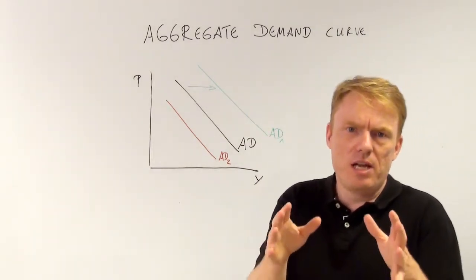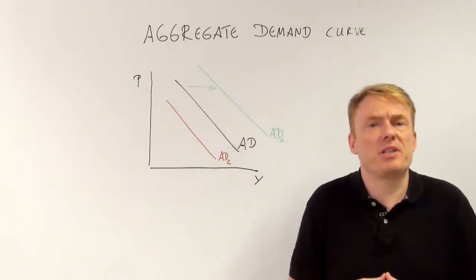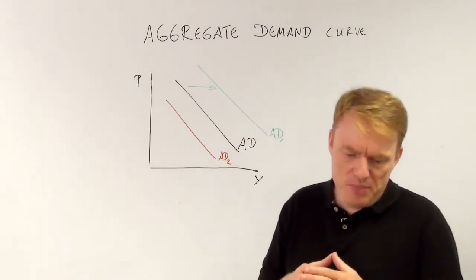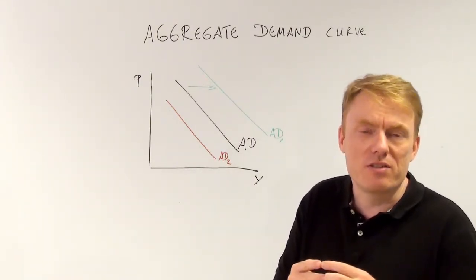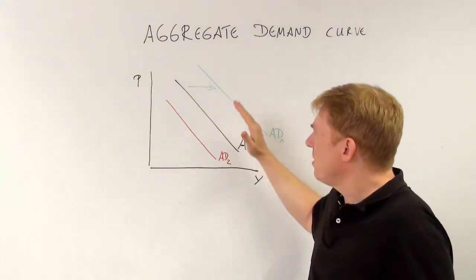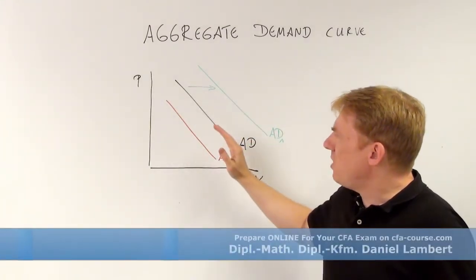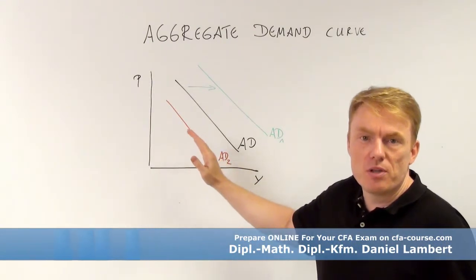Then the aggregate demand curve depends on expectations. If the expected future income rises, then we have a shift to the right. If it decreases, then we have a shift to the left.